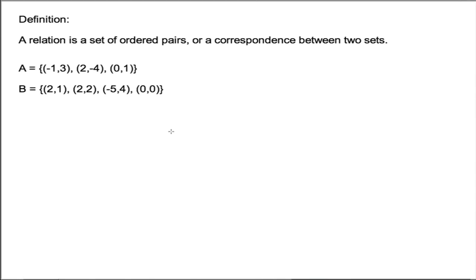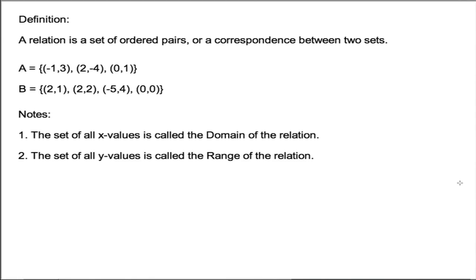Now, recall that ordered pairs have the form X comma Y. So we've got some important notes to be aware of. The set of all X values is called the domain of the relation. The set of all Y values is called the range of the relation.